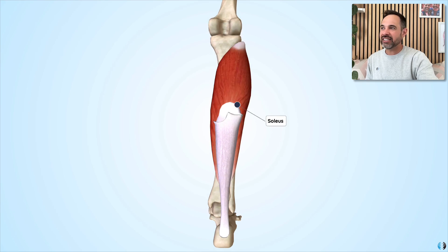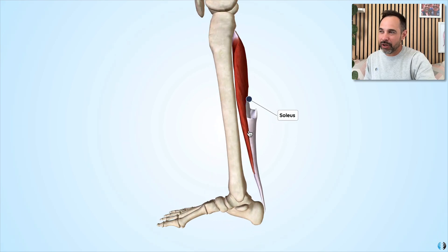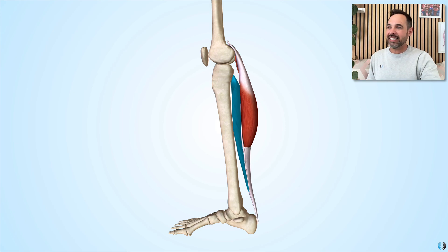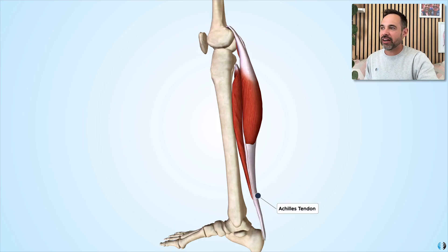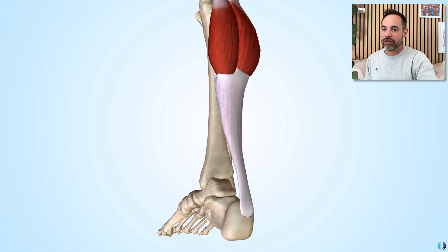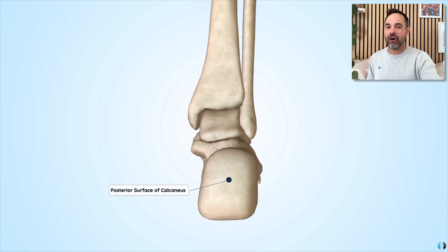The soleus muscle is a little bit deeper than the gastrocnemius, but is also suggested to insert into the Achilles tendon — specifically the more anterior part of this tendon — because we can see how the soleus sits deeper to the gastrocnemius muscle. Those are the key muscles that insert into the Achilles tendon. The tendon itself runs down the posterior aspect of the leg before inserting into the posterior calcaneus at the calcaneal tuberosity.